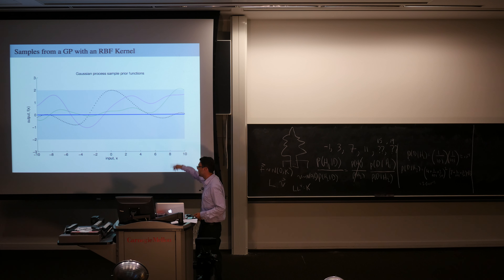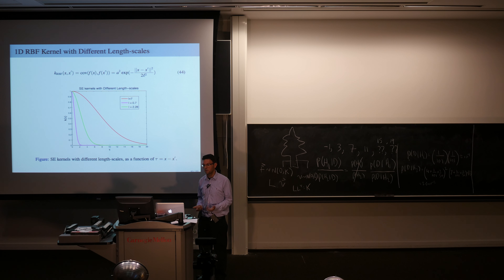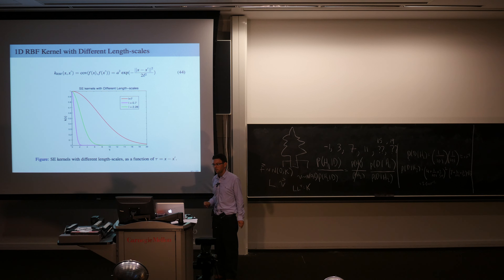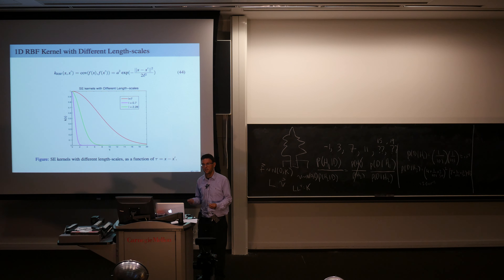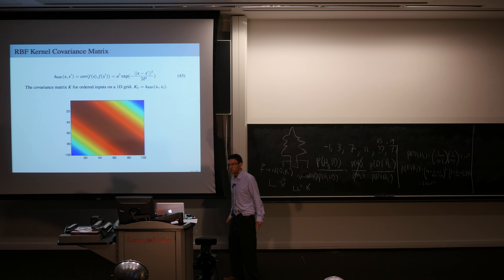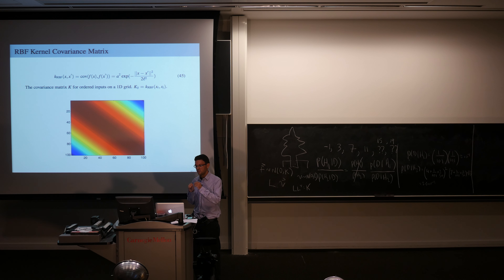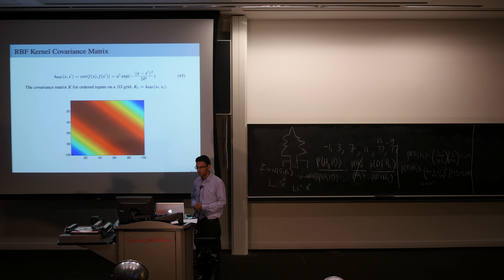The length scale hyperparameter controls how wiggly these functions appear — how quickly they vary as a function of the input space. A long length scale gives more correlations for far-away inputs. A covariance matrix built from an RBF kernel for one-dimensional ordered inputs shows highest correlations along the diagonal, with decreasing correlations moving toward the off-diagonals.